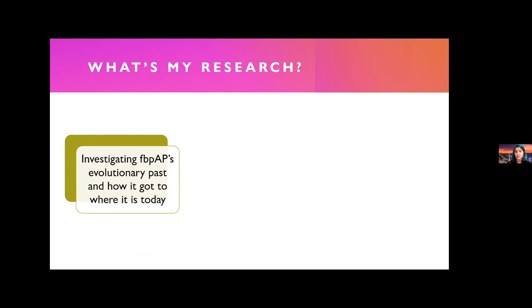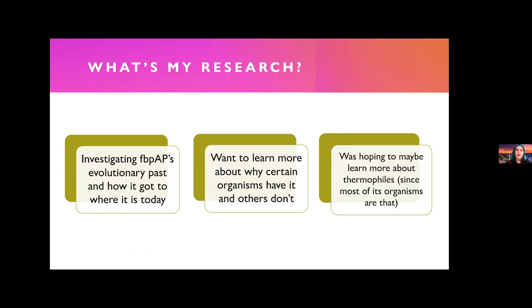So generally talking about my project, I am investigating FBPAP's evolutionary past to see how it got to where it is today, especially in its bifunctionality to see how it evolved to do both jobs. I also wanted to learn more about archaea and why certain organisms have it and others do not, because it's common in thermophilic archaea, but it does not show up in all of them, which is interesting and possibly a sign of gene loss. As well, originally I was very interested in thermophiles, which is why I started looking into this enzyme, because I was intrigued by the fact that it was particularly heat stable, and I was wondering if it could be useful in other thermophilic organisms that we might find, for example, in higher temperature situations or in extraterrestrial life, if we find similar enzymes there.